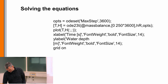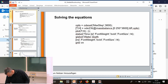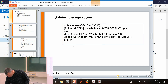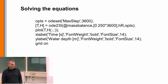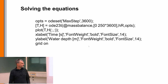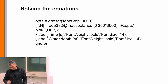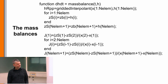I need to make this a little bit bigger because it spans two lines — now it's correct. I also add an x-label, y-label, and a grid. This is just solving the equations. Now we have to define the mass balance equations.